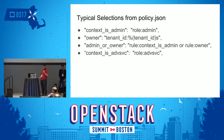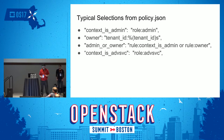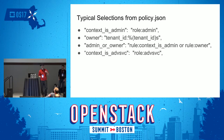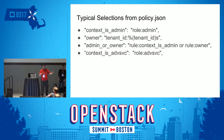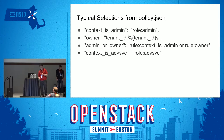I've pulled out a couple of rules from the Neutron policy.json file to give you a sense of what they're doing. They have a top-level rule, 'context is admin,' which checks if the token has the admin role on it. They also have a rule called 'owner' that checks if the project ID matches. And there's another role they check, 'role ADVSVC,' which, to be honest, I have absolutely no idea what it does.